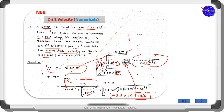Using the calculator directly, we finally get the value of drift velocity. Drift velocity means the velocity of electrons inside this conductor. Thanks for watching.